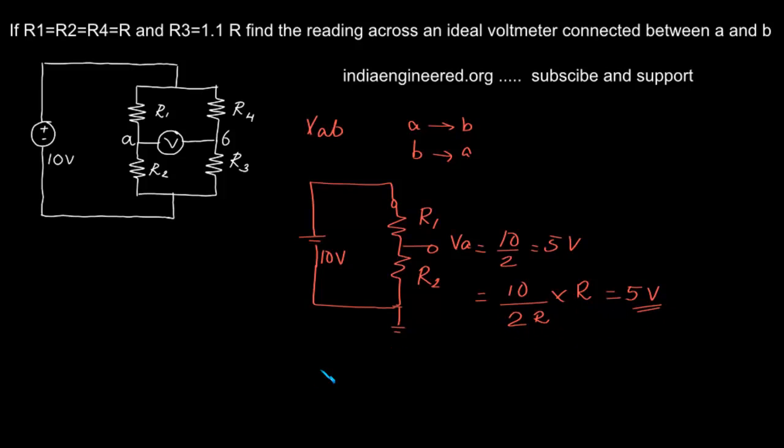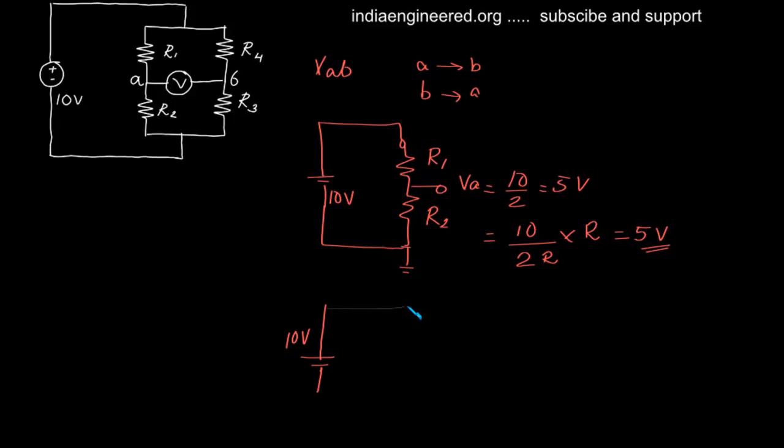We have 10 volts here, R4 which is equal to R, and here we have R3 which is 1.1R. Now we can find out what is VB.